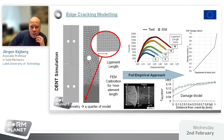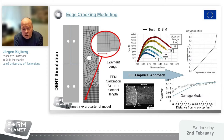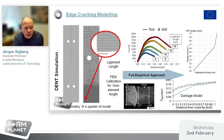Here you can see how this inverse approach is working. As input, we have the essential work of fracture tests — you can see in the middle of the presentation some force-displacement graphs. The essential work of fracture is based on double-edged notched specimens, and to the left you can see the finite element model of these tests. By varying the damage until the response from the model fits to the experimental curve, the finite damage criterion is found.